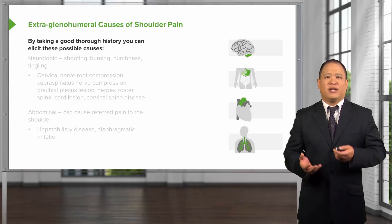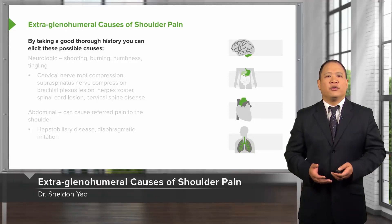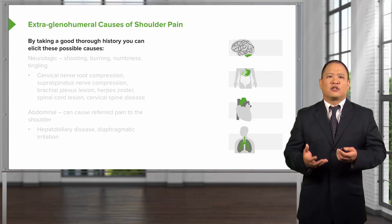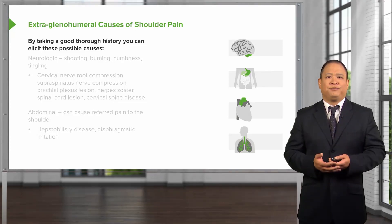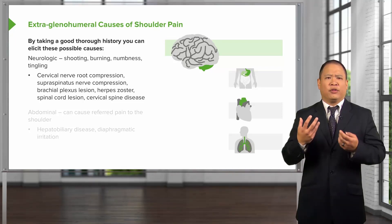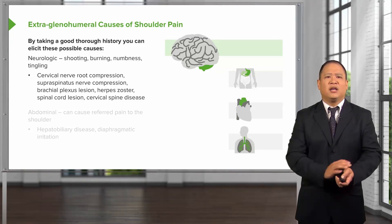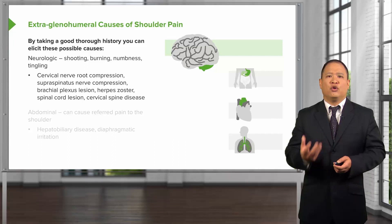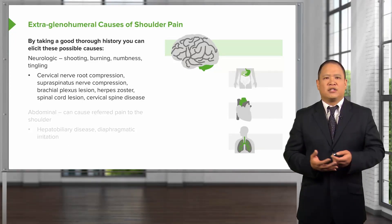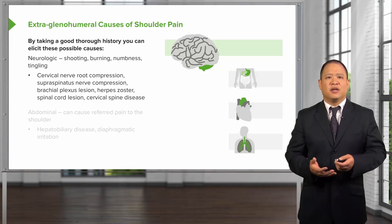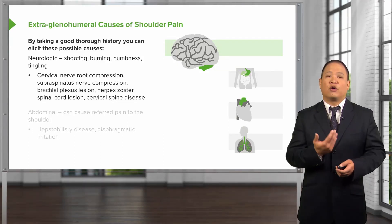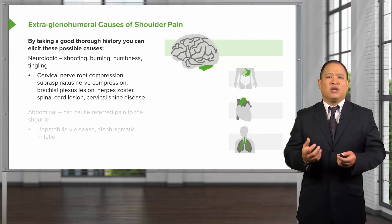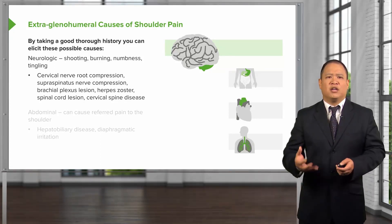There are a lot of potential causes for shoulder pain that are outside of the actual shoulder. We want to make sure that you take a very thorough history. If a patient presents with shooting, burning, numbness, or tingling of their shoulder and radiating pain down the extremity, you have to think of a potential neurologic cause. You need to do a more thorough exam of the cervical spine and perform special tests to rule out a cervical disc or compression of the brachial plexus as it innervates the arm.